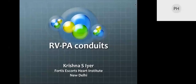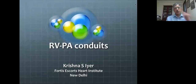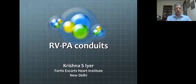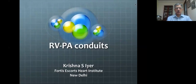Good morning everybody. Today's topic is going to be conduits, and I'll mainly focus on the right ventricle to pulmonary artery conduits, which is the commonest use for conduits in pediatric cardiac surgery. Occasionally conduits are used in other portions — the aortic root sometimes, sometimes in aortic reconstruction — but the vast majority of times that conduits are used and of relevance to our specialty is the right ventricle to pulmonary artery conduits.